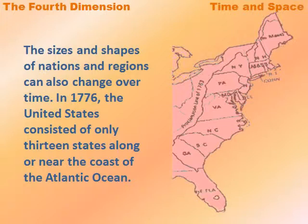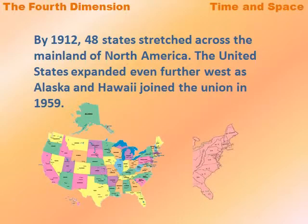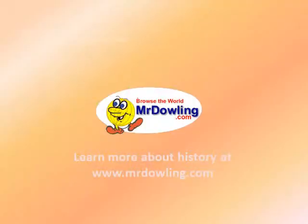The sizes and shapes of nations and regions can also change over time. In 1776, the United States consisted of only 13 states along or near the coast of the Atlantic Ocean. By 1912, 48 states stretched across the mainland of North America. The United States expanded even further west as Alaska and Hawaii joined the Union in 1959.